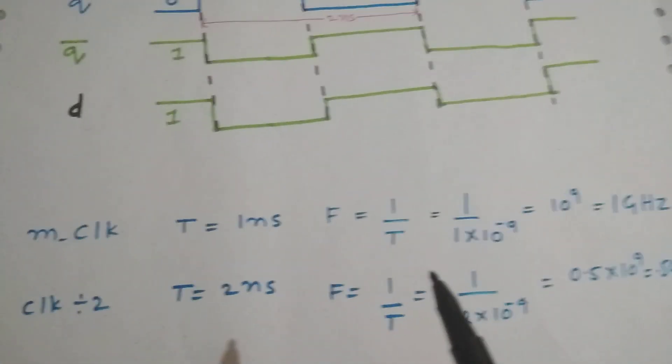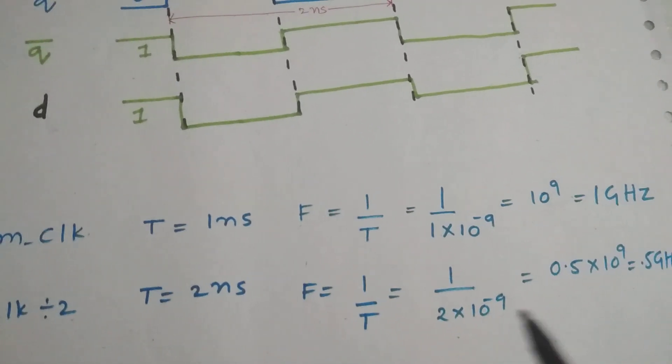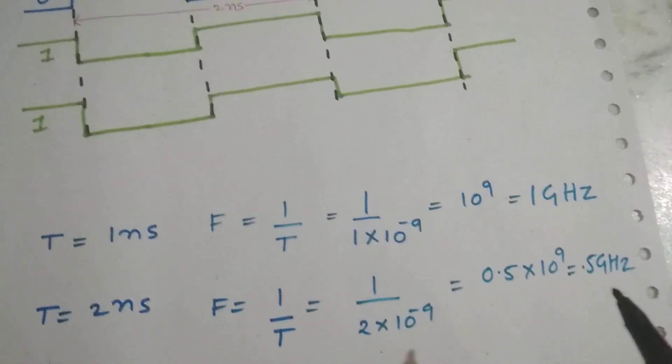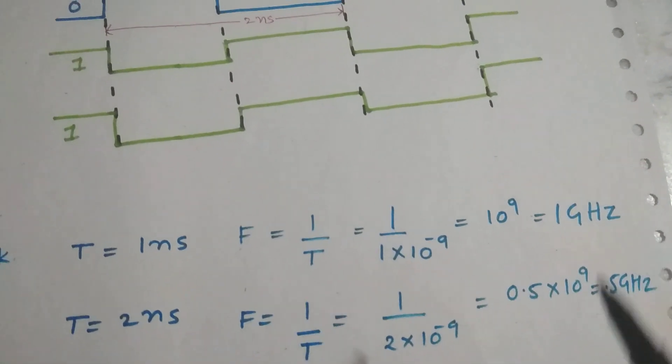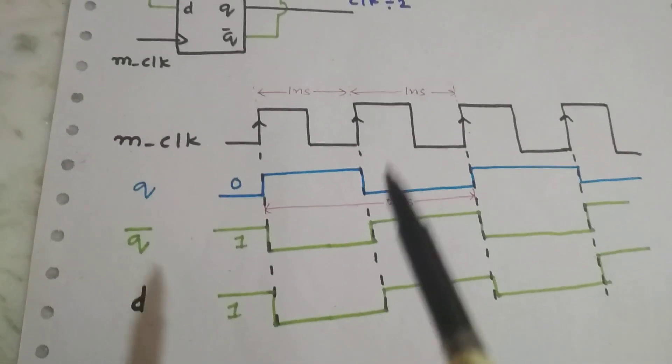Now similarly, 1 divided by 2 times 10 power minus 9 nanoseconds, which is 0.5 times 10 power 9, that is 0.5 gigahertz. As you can see, the frequency is divided by 2.